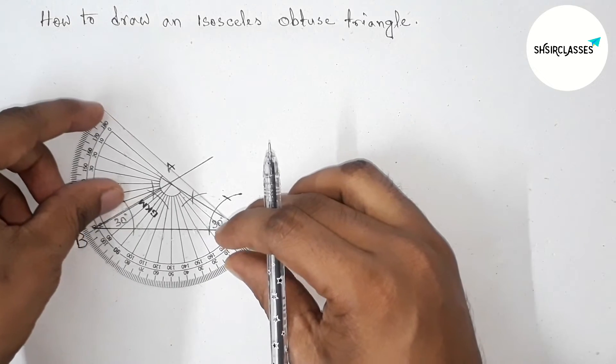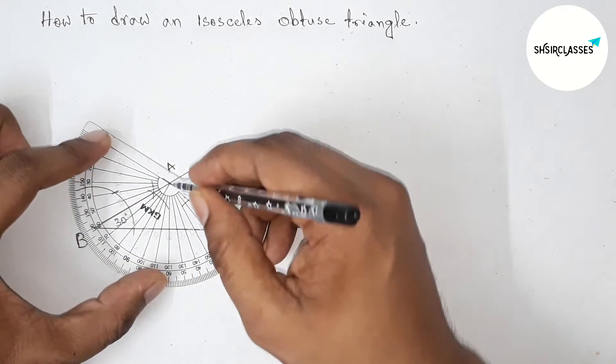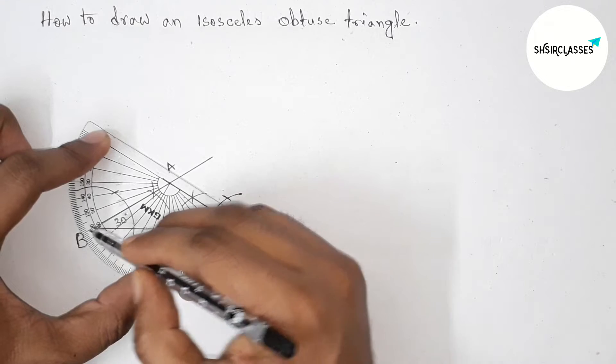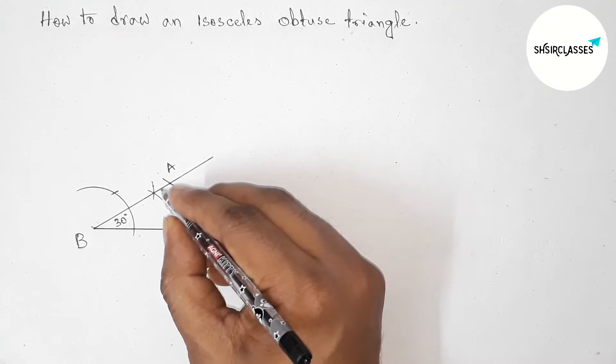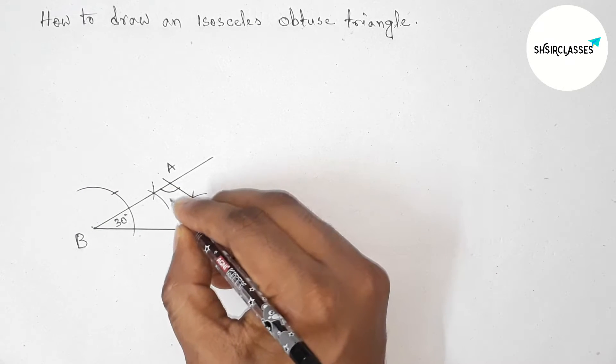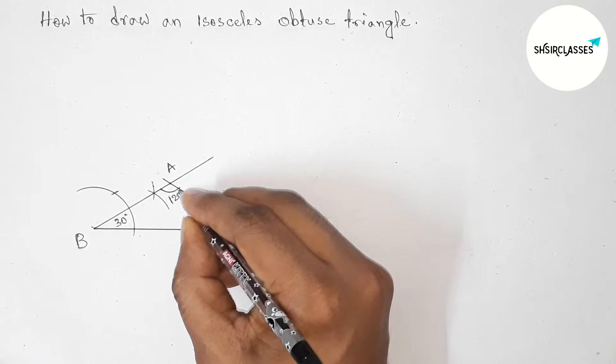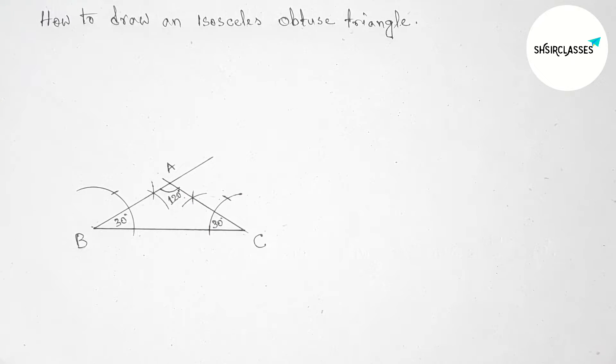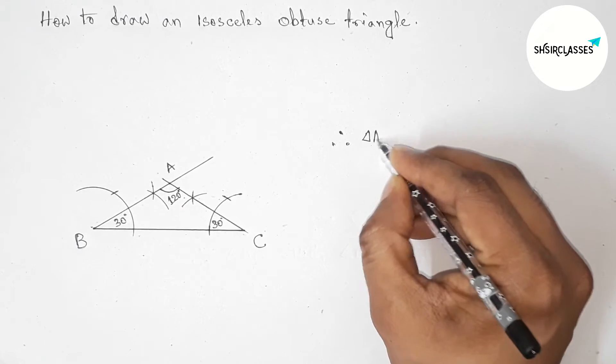Putting the protractor on the point A and this is perfectly 120 degrees. So angle A that is 120 degrees and this is an obtuse angle. Here triangle ABC, so therefore triangle ABC is an isosceles